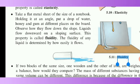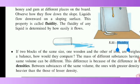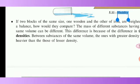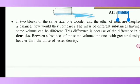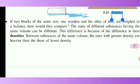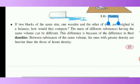If two blocks of the same size — one wooden and another of iron — are weighed on a balance, how would they compare? The mass of different substances having the same volume can be determined. This difference is because of the difference in their densities.